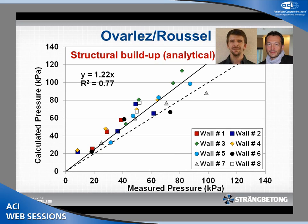Ovarles and Roussel are physicists, so they didn't do much lab work — this is a strictly analytical model. And it works fairly well too, with a higher slope and an R-squared of 0.77.